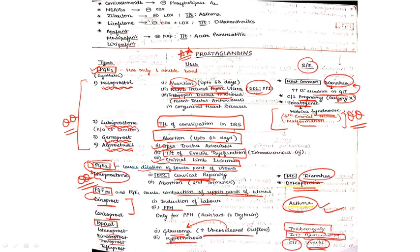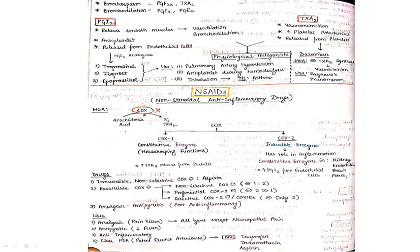Now coming to PGI2. It relaxes smooth muscle, causing vasodilation and bronchodilation. It is also antiplatelet. They are released from endothelial cells and the drugs are treprostinil, iloprost, and epoprostenol. The uses are pulmonary artery hypertension, then antiplatelet drug during hemodialysis, and through inhalation it can be used for the treatment of asthma.